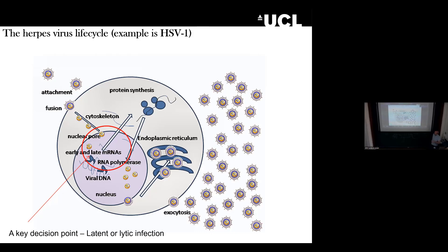A key decision point that you have to bear in mind when thinking about herpes viruses occurs at a very early stage. In both lytic and latent infection, the capsid enters the nucleus and delivers the viral genome. But the decision point comes at whether you get viral gene expression. In latency, you do not get lytic viral gene expression. It's the inhibition of that initiation of lytic viral gene expression which is thought to cause the virus to default into a latent, non-lytic infection.